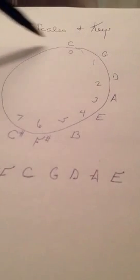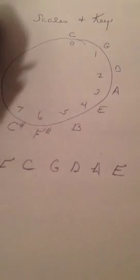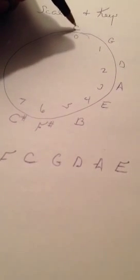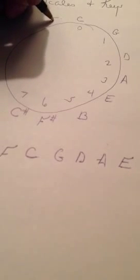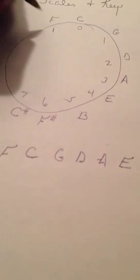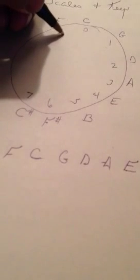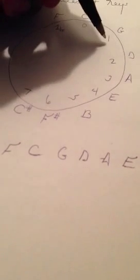Now, when you go counterclockwise on the circle of fifths, on this circle of fifths it actually moves in fourths. So if you go C, D, E, F, has the sound of here comes the bride. You'll go up from C to F, which will be a fourth away, and when you're going counterclockwise, you'll have flats. When you're going clockwise, the scales will have sharps.